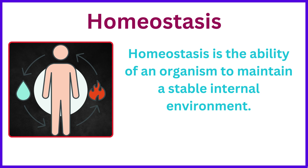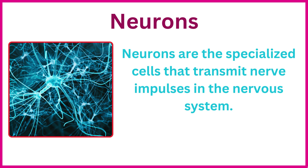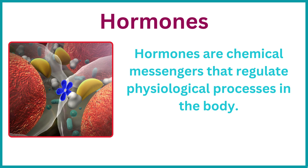Homeostasis is the ability of an organism to maintain a stable internal environment. Neurons are the specialized cells that transmit nerve impulses in the nervous system. Hormones are chemical messengers that regulate physiological processes in the body.